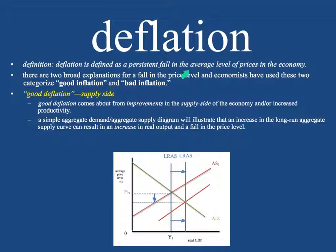Definition. Deflation is defined as a persistent fall in the average level of prices in the economy. That means that prices are going down persistently. If you think about a simple aggregate supply–aggregate demand curve, there are really only two ways that prices can fall: either the aggregate supply curve is going to shift outward, or the aggregate demand curve is going to shift inward.